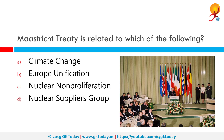Maastricht Treaty is related to which of the following? The correct answer is European Unification. This treaty was signed on 7 February 1992 by the members of the European Community in Maastricht, Netherlands, to further European integration.